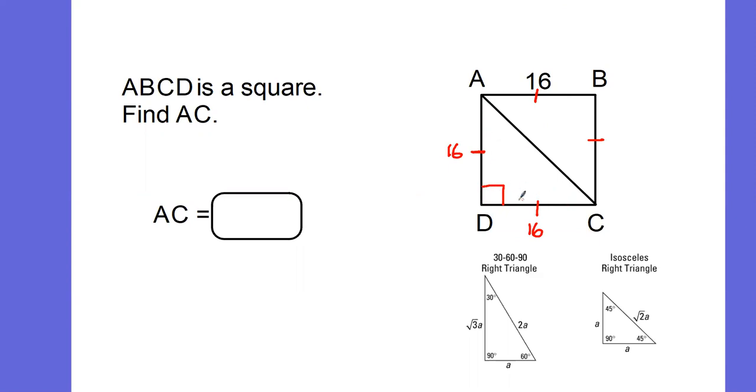then we know we have an isosceles triangle. And we know that these angles directly across from those 16 unit sides have to be 45 degrees. So this is a 45-45-90 right triangle.